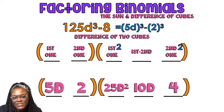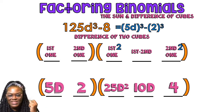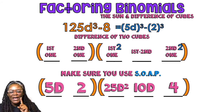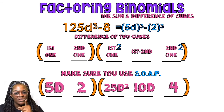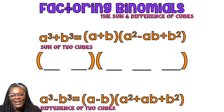First one, second one, first one squared. First one times the second one, the second one squared. Use some soap! Don't be nasty. Use some soap. The first part is a binomial. The second part is a trinomial.